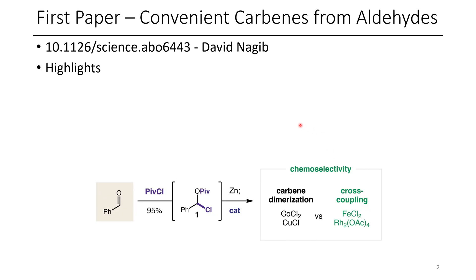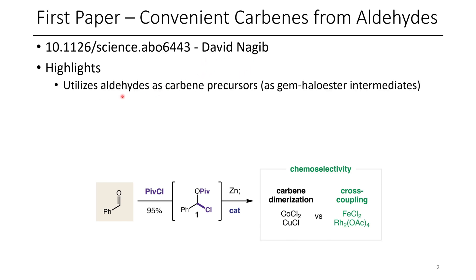The first paper for today is the convenient synthesis of carbenes from aldehydes. This was done by David Nagib's group, and some of the highlights of this paper include the use of aldehydes as carbene precursors through the intermediacy of geminal haloester intermediates.